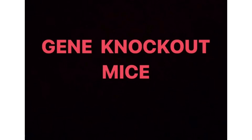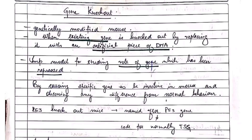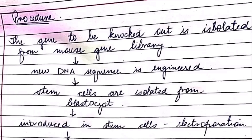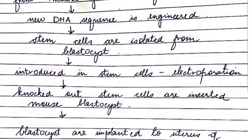Let's start with gene knockout mice. Knockout means that a gene which is already existing is replaced with an artificial piece of DNA. The gene which is supposed to be knocked out is isolated from the mouse, a new DNA sequence is engineered, and stem cells are isolated from the blastocyst using electroporation.